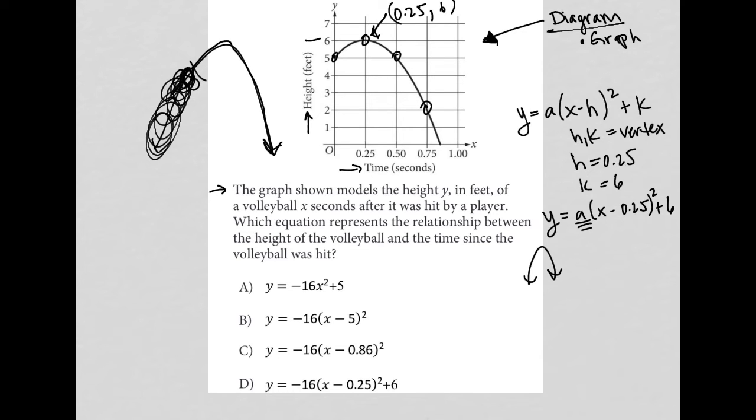But when I look at the answer choices, I don't really have to figure out what a is because choice D is the only answer that matches the format that I'm looking for, for the equation of a parabola. So that is the fastest way to find the answer, in my opinion.